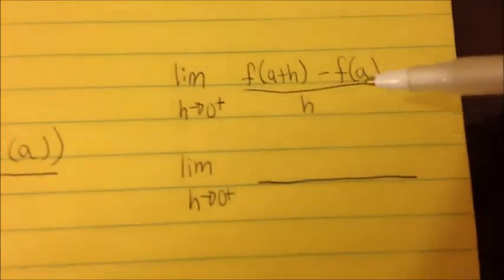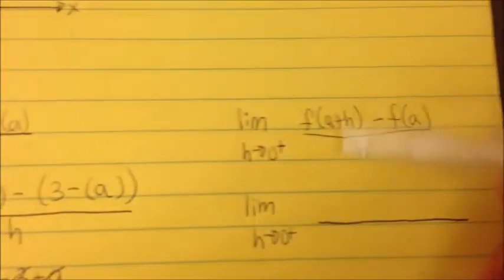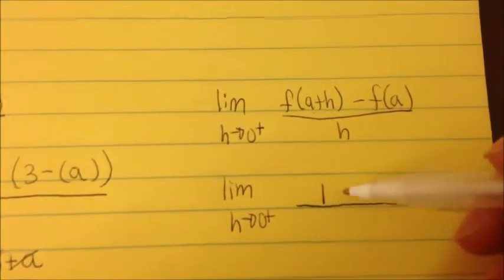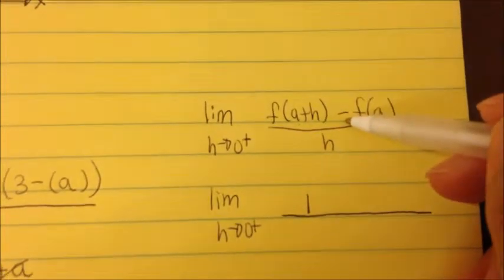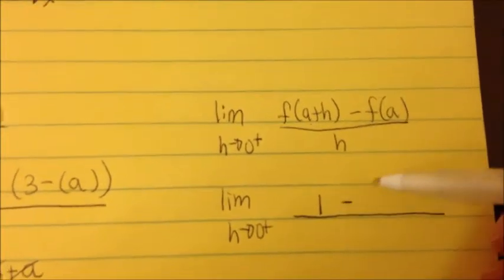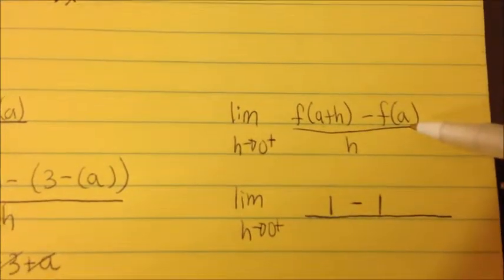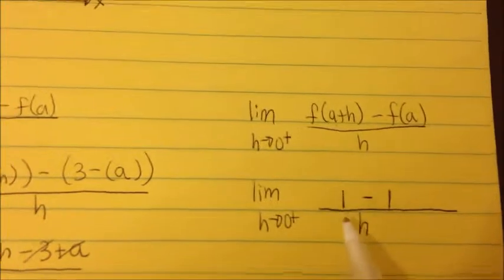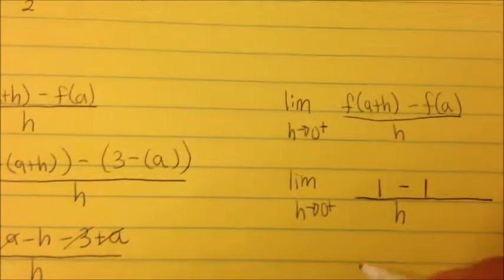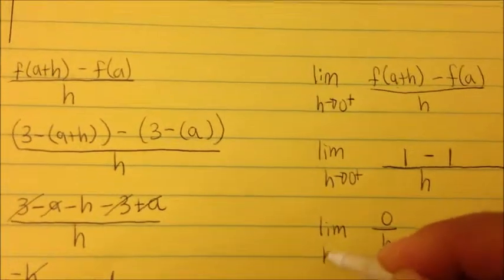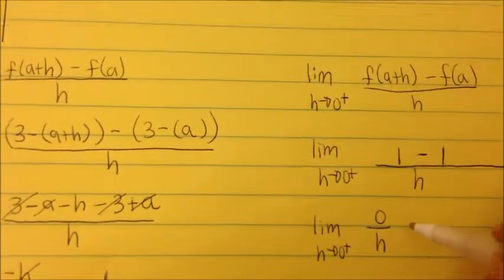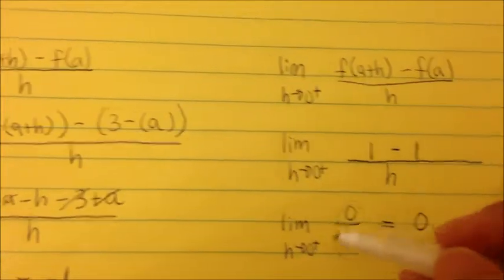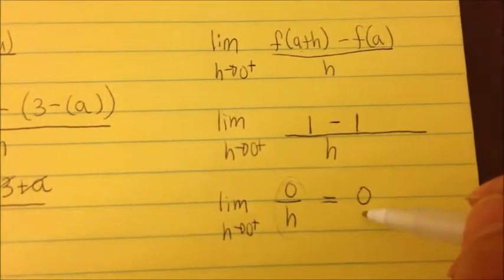Since y equals 1 and there's nothing to substitute in, I put 1 minus 1, all over h. So that gives 0 over h. The limit as h approaches 0 from the right-hand side then becomes 0, because 0 divided by anything is 0. We simplify first before substituting h to avoid an undefined result.